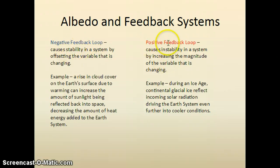However, a positive feedback loop can drive something out of control. For example, during an ice age, continental glacial ice reflects incoming solar radiation that drives the Earth even further into cooler conditions. As glacial ice blankets the northern hemisphere or northern parts of the planet and the southern parts of the Earth, you're creating a larger reflector that less sunlight, less heat energy is going to reach the Earth's surface. So this would drive it to a more unstable condition.